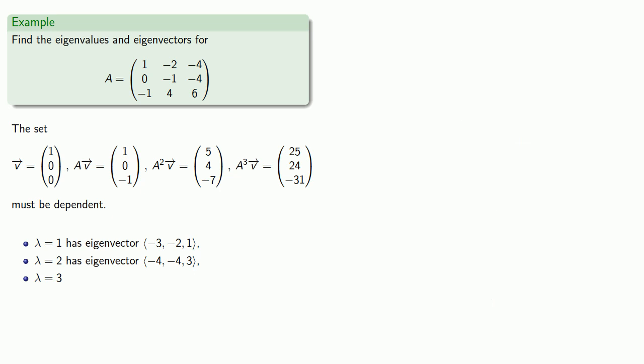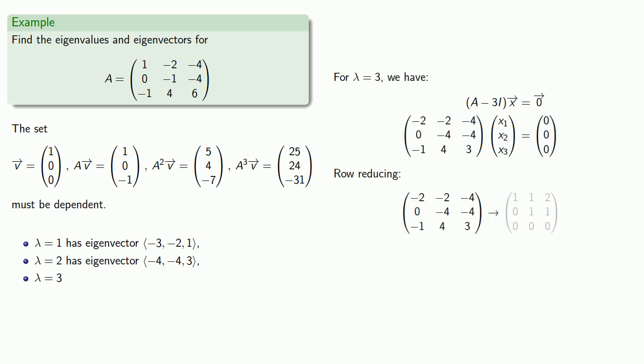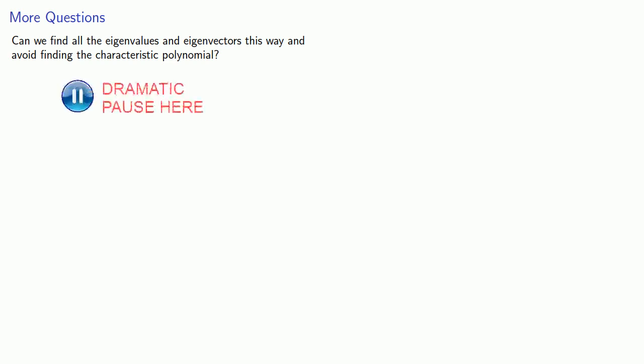For lambda equals 3, we have... So the question to ask is, can we find all eigenvalues and eigenvectors this way and avoid finding the characteristic polynomial? And the answer is yes! Of course, the universe never gives us something for nothing, and so we will need to exert some effort, but nowhere nearly as much effort as we would if we were to try and find the characteristic polynomial.